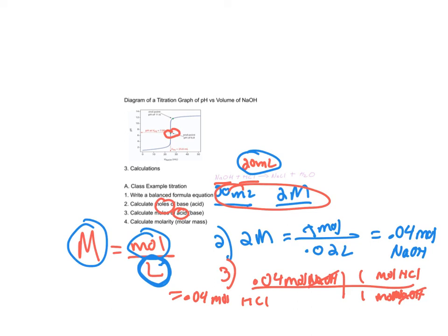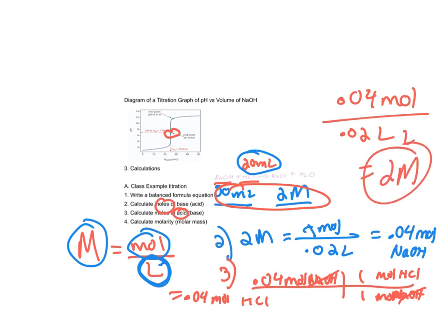Once I knew moles of one of my species, acid or base, I could do a mole to mole conversion and once I know the number of moles of acid, I know the original volume of acid that I had in my flask. You're going to see this demonstrated in a minute. I can go ahead and calculate the concentration or the molarity. 0.04 divided by 0.02 liters is a 2 molar solution of HCl.